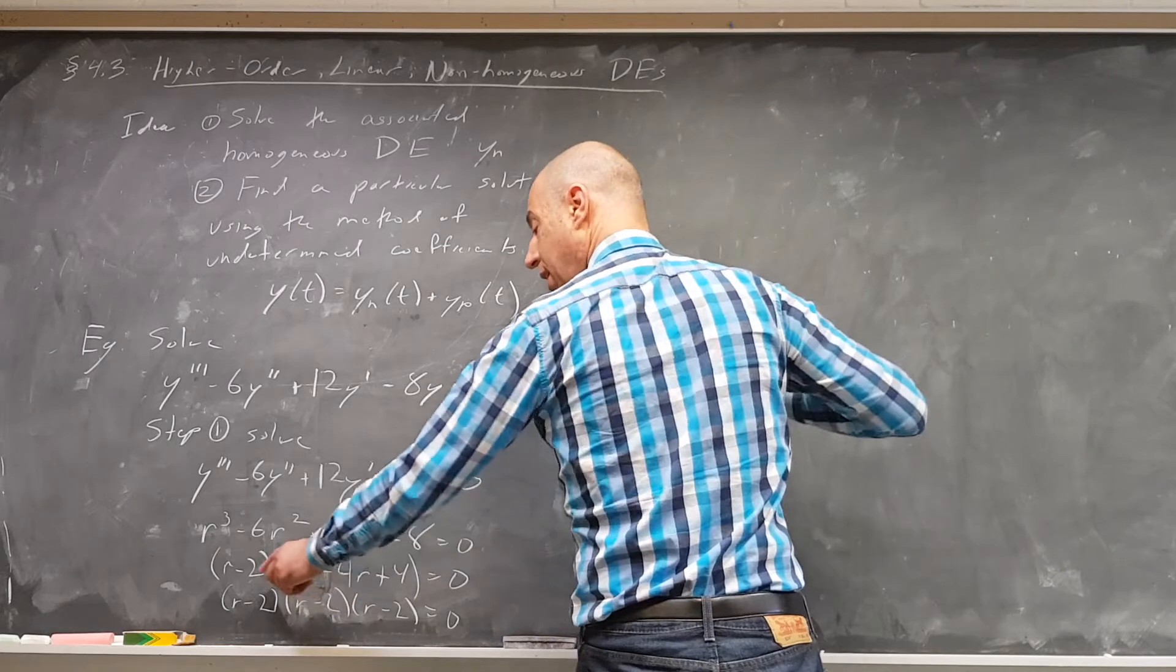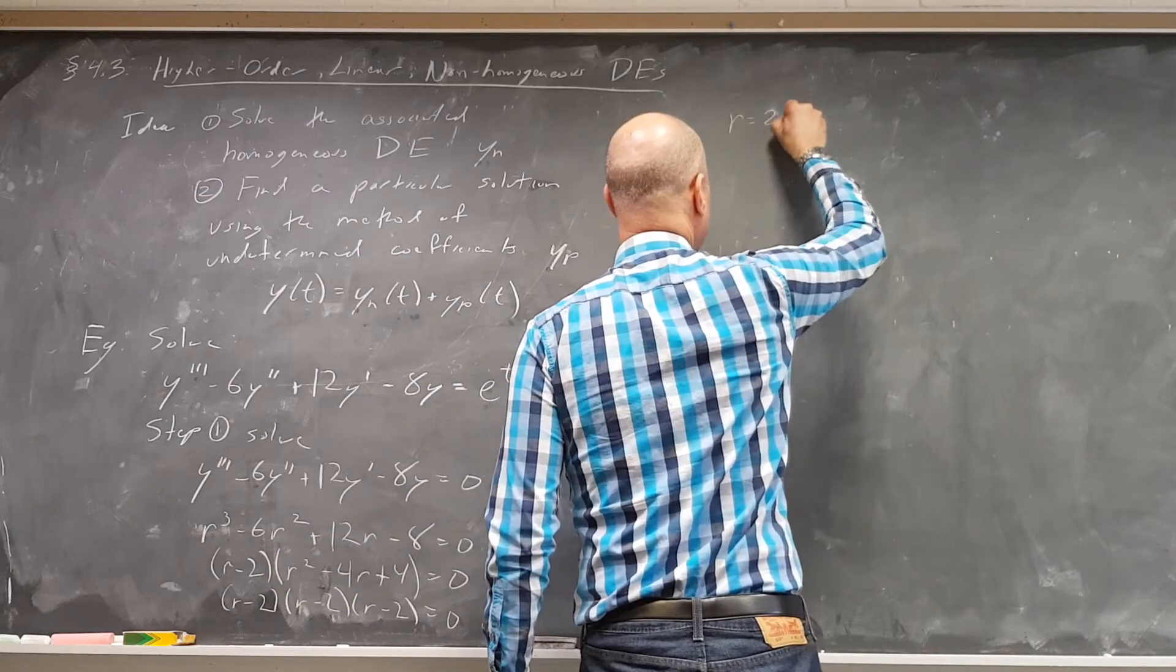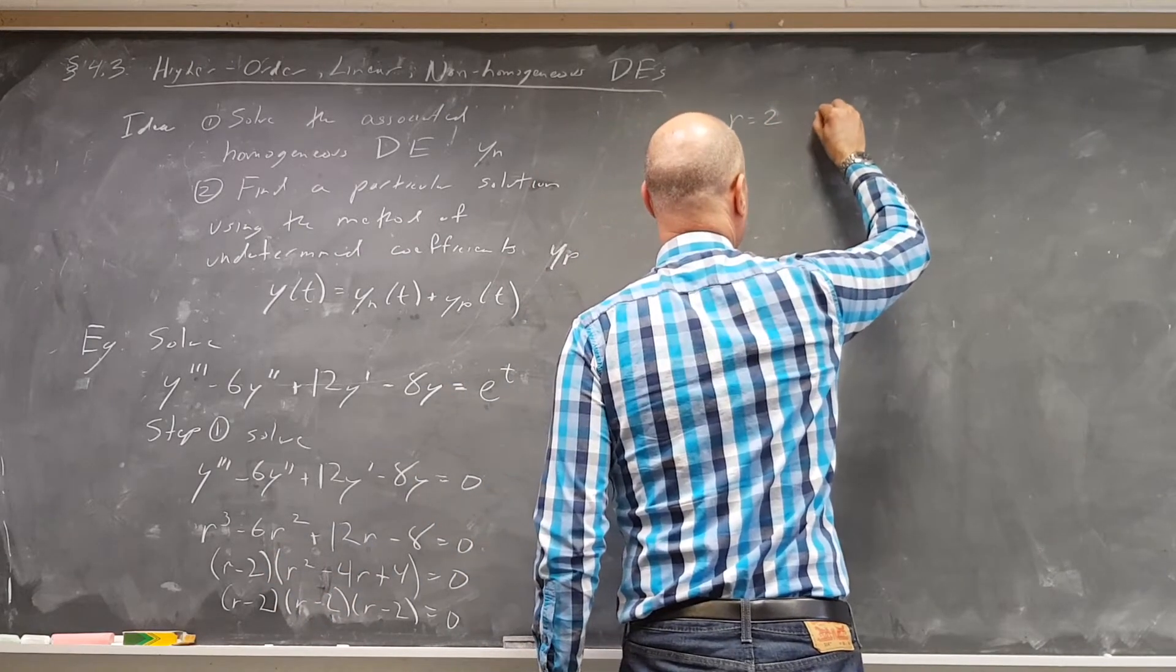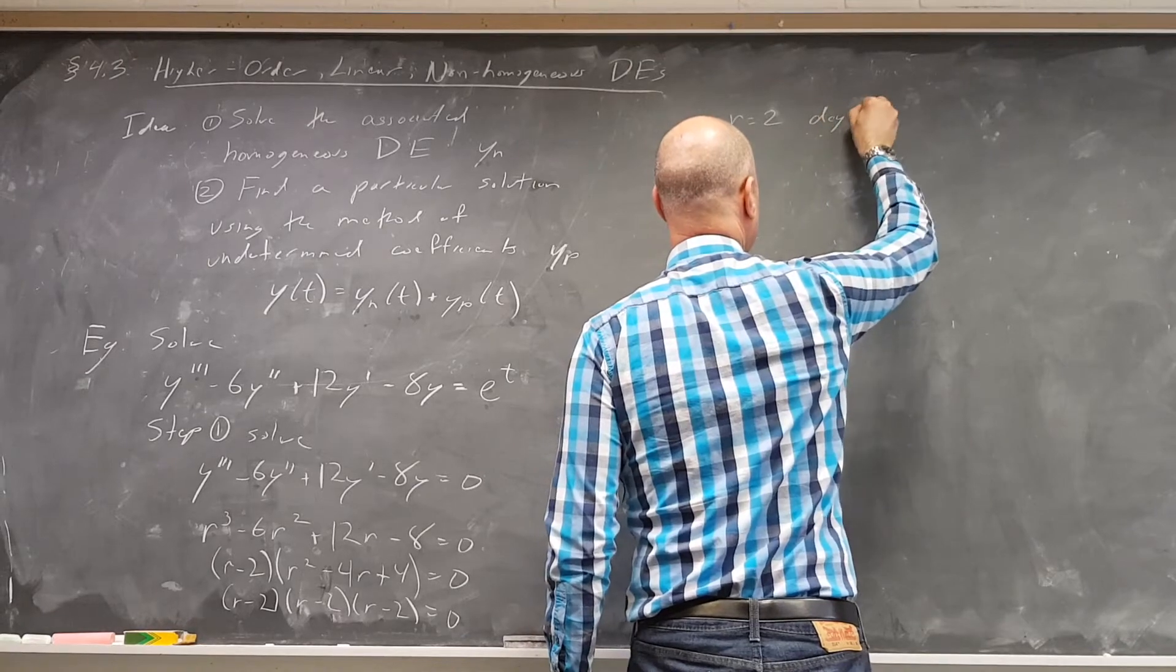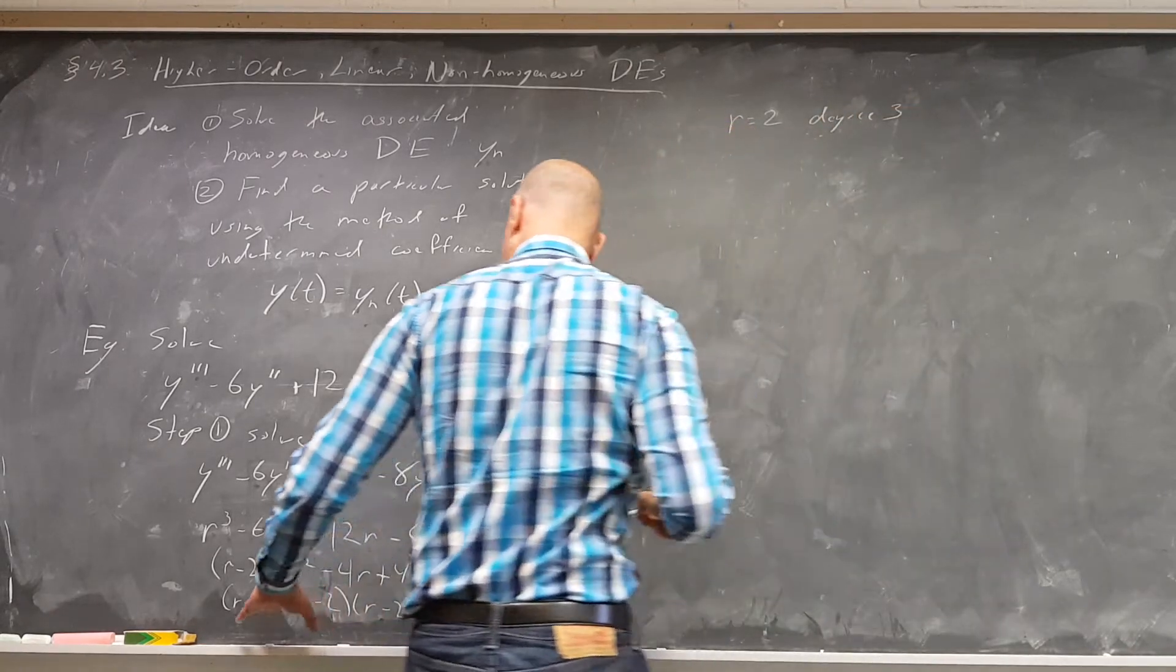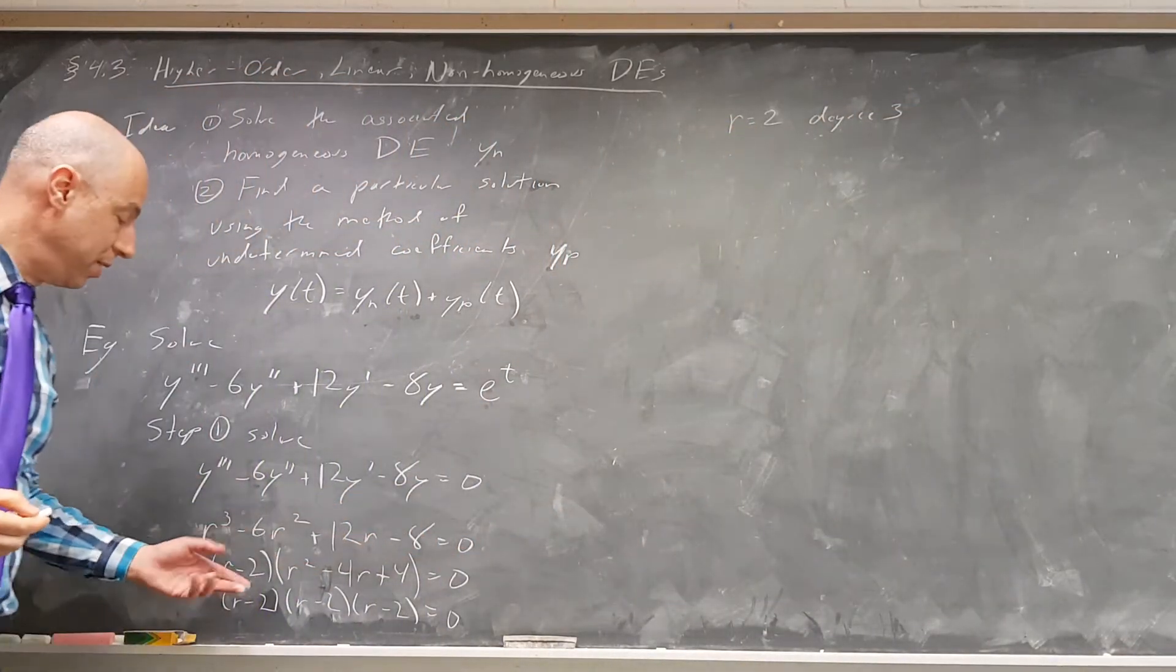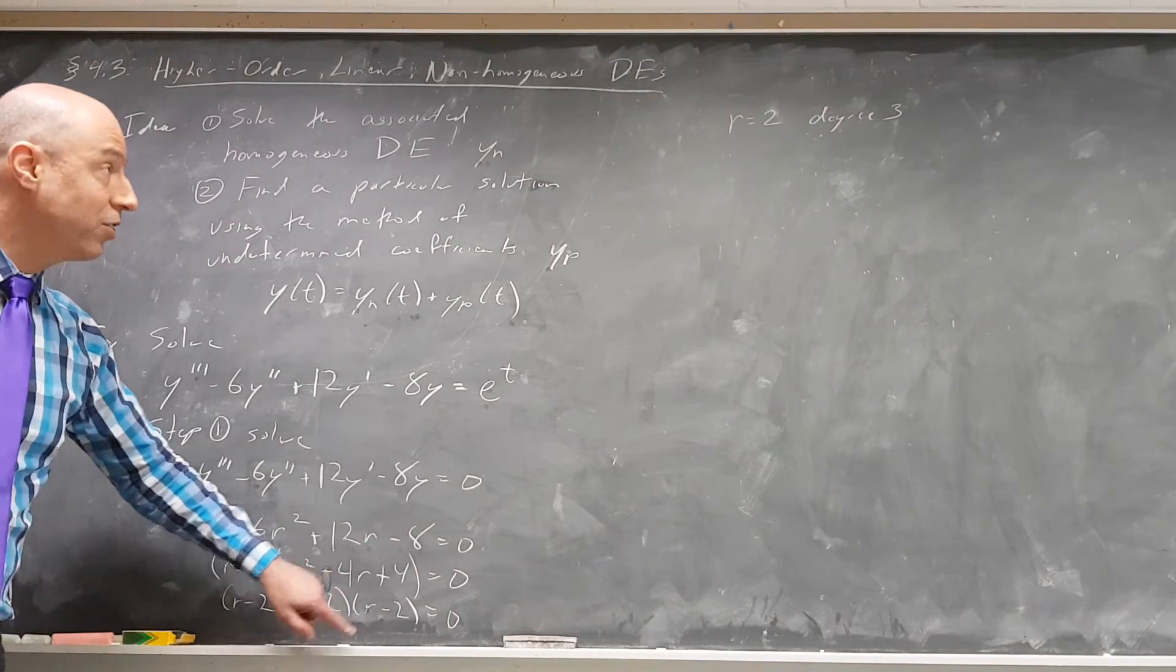So we have r equals 2 as a root, and it has degree 3. It happens 3 times, or order 3. It's the r minus 2, r minus 2, r minus 2.